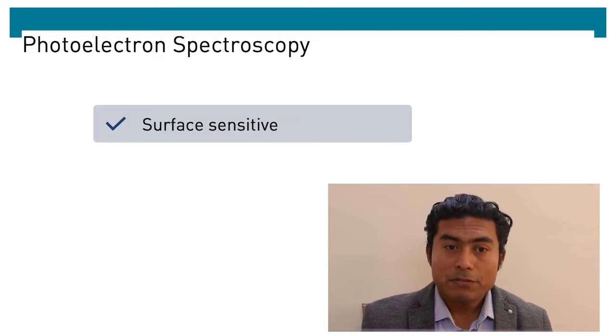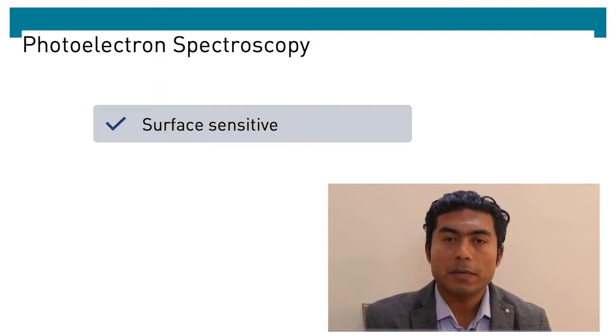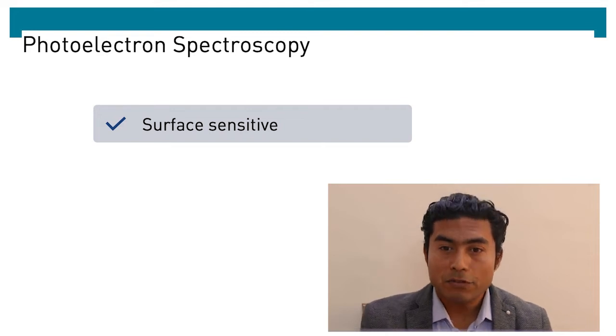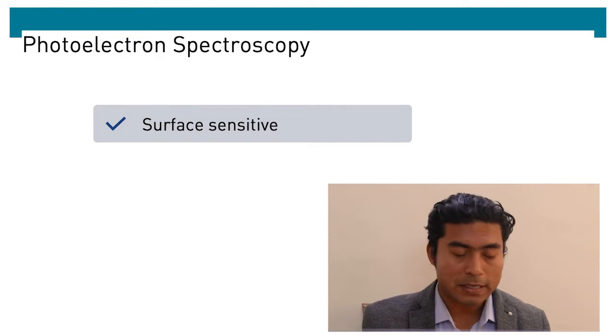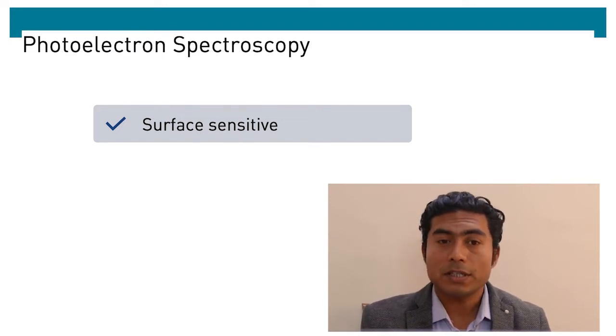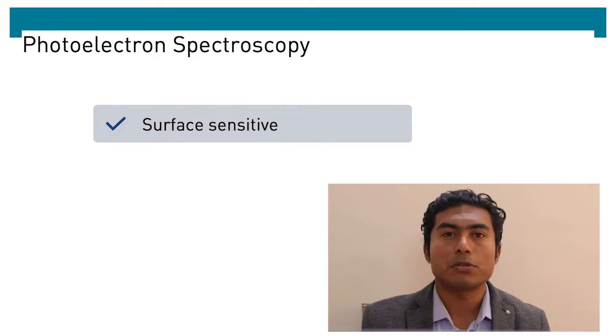One key feature of photoelectron spectroscopy is surface sensitivity, which means that the information we derive comes mostly from the surface and the near surface regions. This is the reason photoelectron spectroscopy is referred as a surface technique.